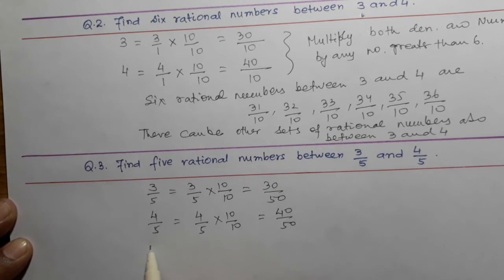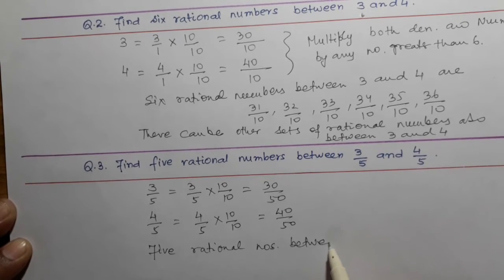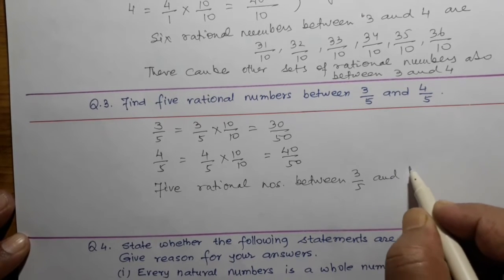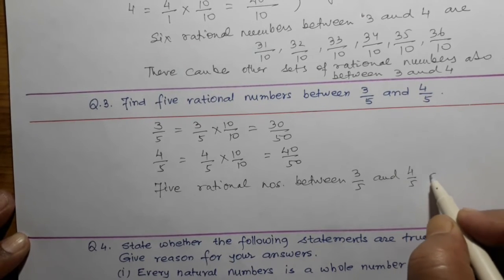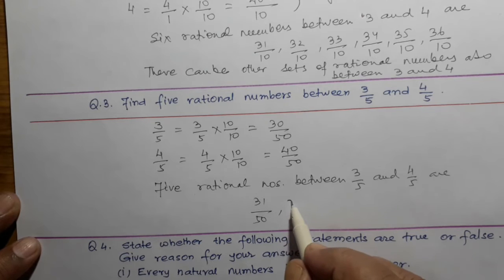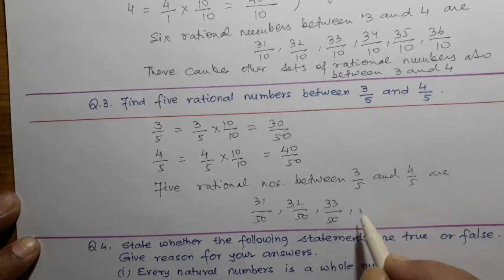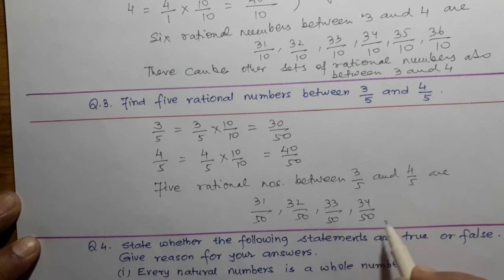So, 5 rational numbers between 3 by 5 and 4 by 5 are: 31 by 50, 32 by 50, 33 by 50, 34 by 50, and 35 by 50.